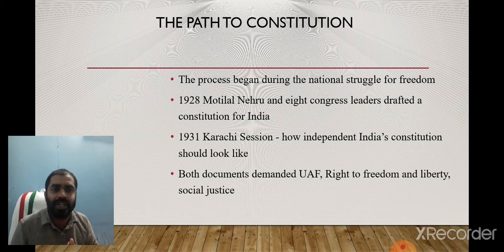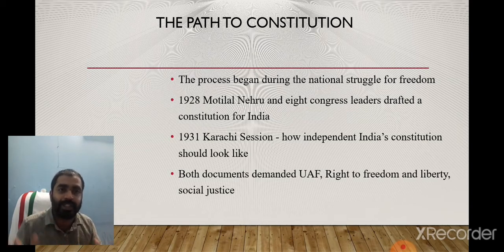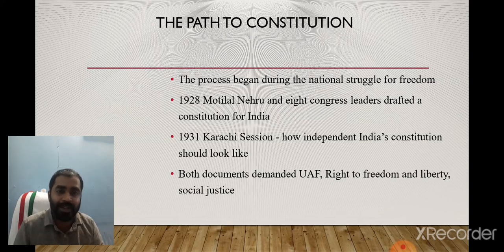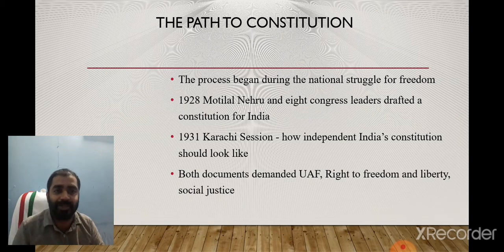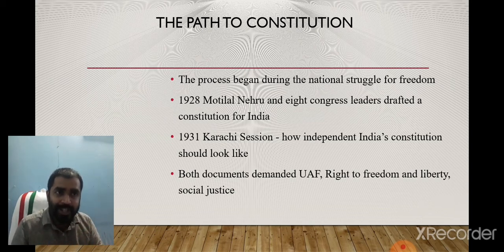In 1928, Motilal Nehru and eight other Congress leaders drafted a constitution for India. In 1931, the Karachi Session drafted a document showing what the nature of the Indian Constitution should be. Both these documents demanded universal adult franchise, the right to freedom, liberty, and social justice.